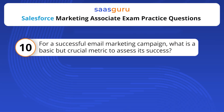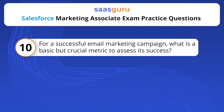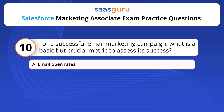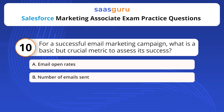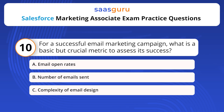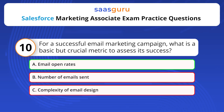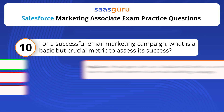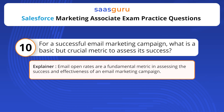For a successful email marketing campaign, what is a basic but crucial metric to assess its success? Options: Email open rates; number of emails sent; complexity of email design. The answer is option A — Email open rates. Email open rates are a fundamental metric in assessing the success and effectiveness of an email marketing campaign.